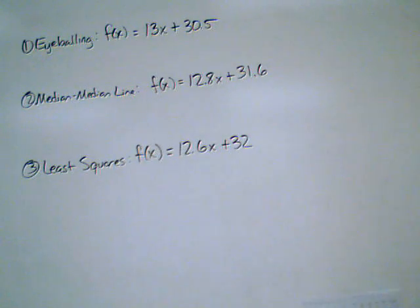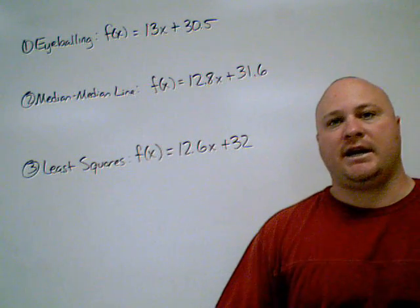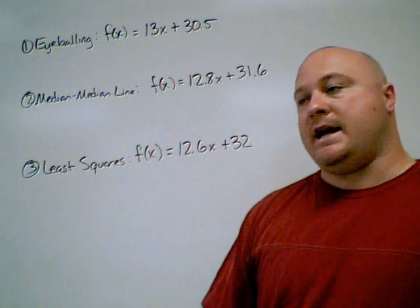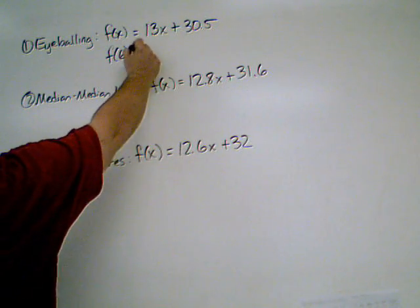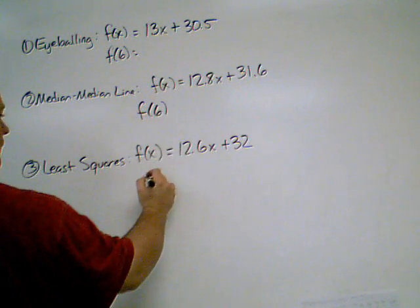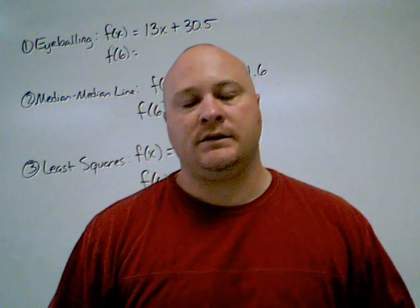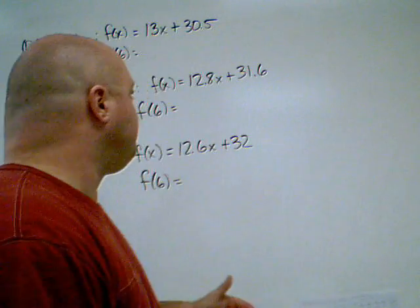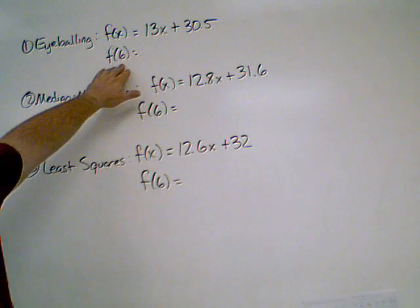Now going back to our study guide, the question on problem number six says, predict the interval between geysers for a duration of six minutes. Now remember our duration was our x column. So we're going to plug in six for x. I'm going to do that for all three of my methods, just to compare my results. You don't have to do it this way. It just depends on what the question asks you to do.